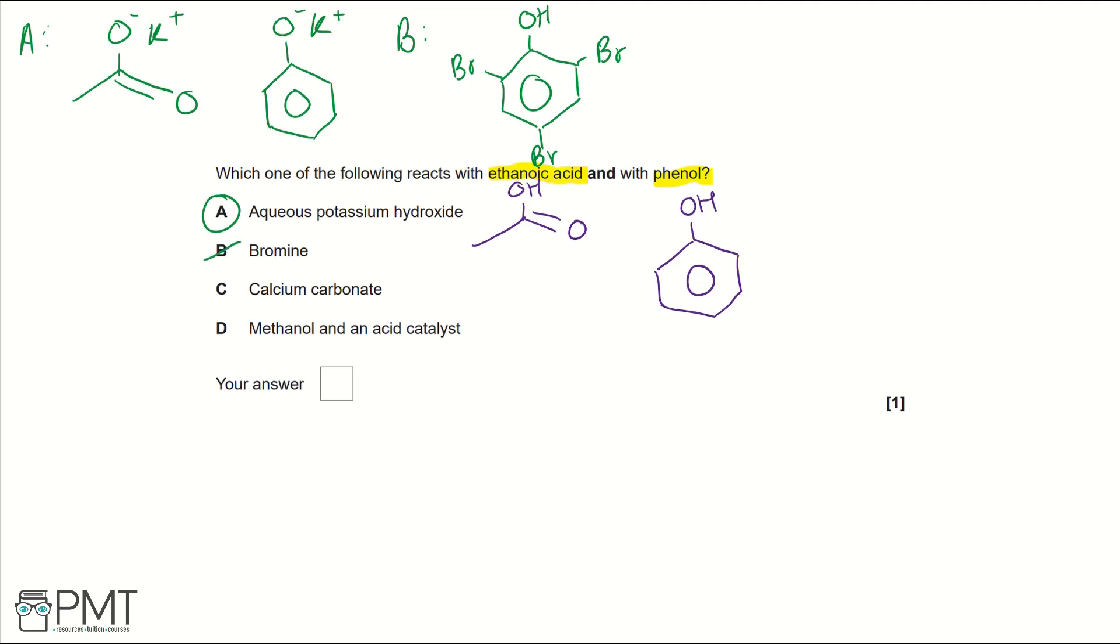Looking at C, calcium carbonate. With acids, this reacts, and it's a test for acids. When you react them with a carbonate, you'll produce carbon dioxide and an organic product. Like with A, we're going to have a carboxylate ion from our ethanoic acid, and we're going to use two of these and bond it to Ca2+. But phenol is not a strong enough acid for this test to work, so it won't react. Calcium carbonate reacts with ethanoic acid but doesn't react with both, so it can't be our answer.